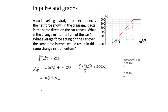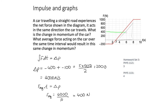Summing all contributions: delta P equals −400 minus 100 plus 2500 plus 2000 equals 4000 Newton seconds. For the average force, F_average times T equals delta P, so F_average equals 4000 divided by 10 seconds, which is 400 Newtons. Sketching 400 Newtons on the graph confirms that the area looks consistent, so the answer is reasonable.